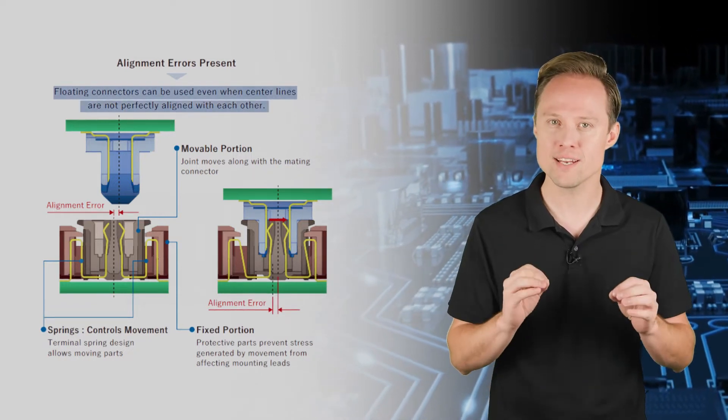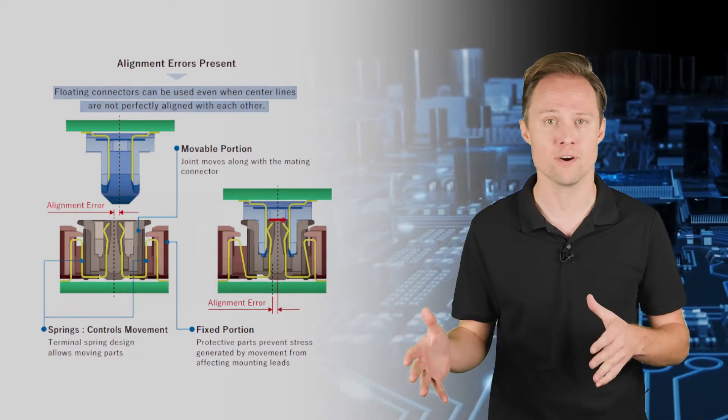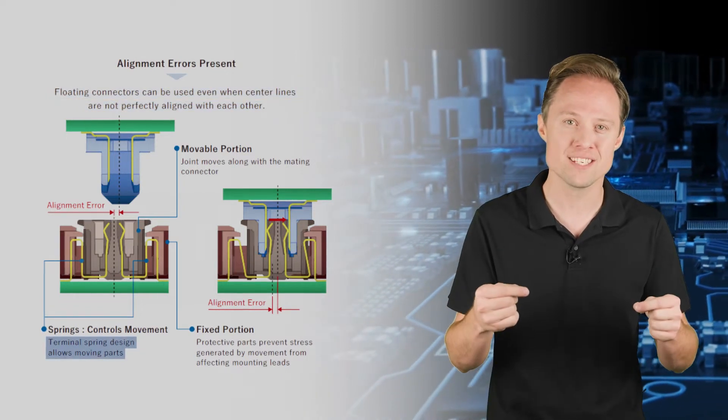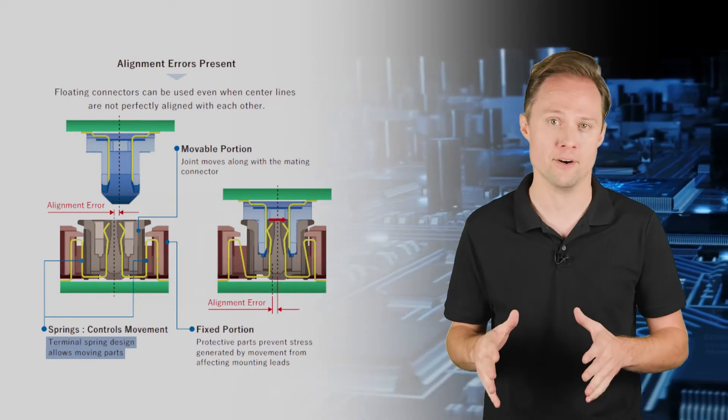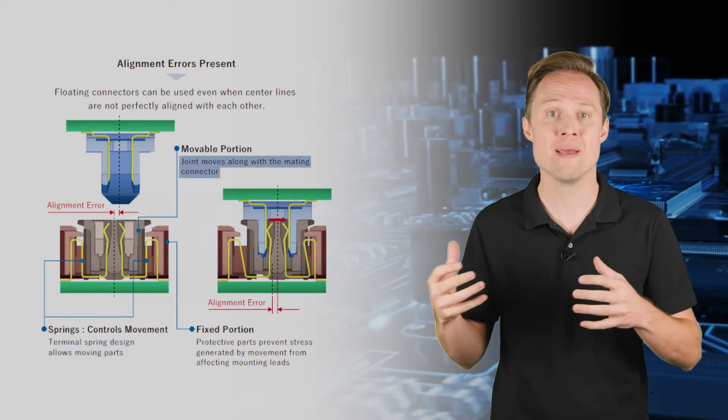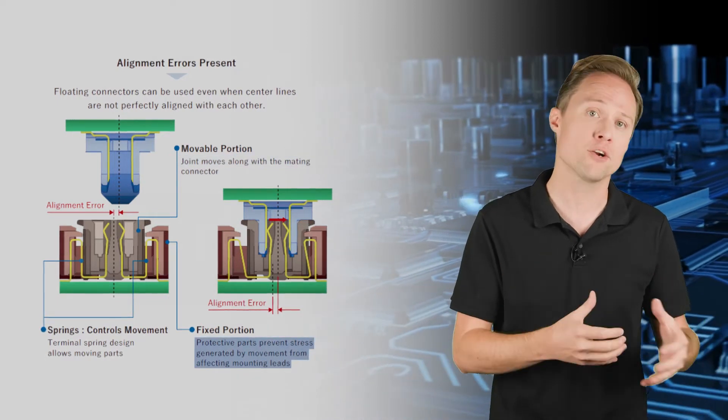This way, floating connectors can be used even when the centers are not perfectly aligned with one another. An internal terminal spring design allows the receptacle to adjust accordingly with the header. A movable joint shifts the mating connector while a fixed portion acts as a buffer from the stress generated by movement from mounting leads.